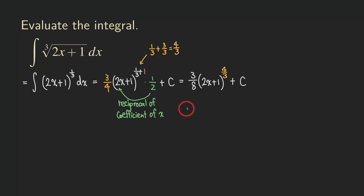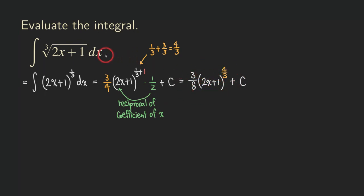The one thing that's really important to remember is that we can only do this problem this way if the inner function is a linear expression. So if it's not a linear expression — like 2x squared plus 1 — then we cannot do it this way. We would probably have to try some other techniques, depending on the situation. And to understand how all those numbers come together, we should do a check by differentiating this function and see if we get back to the original integrand.